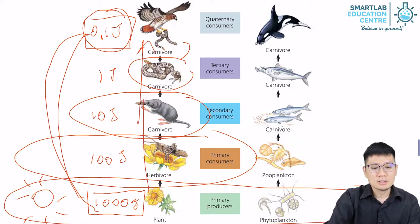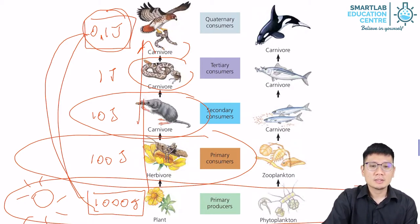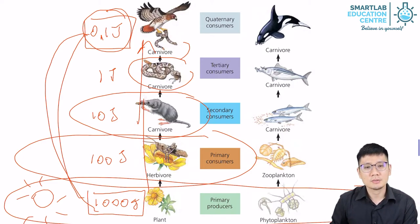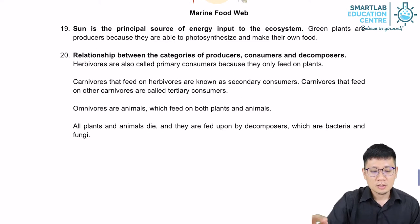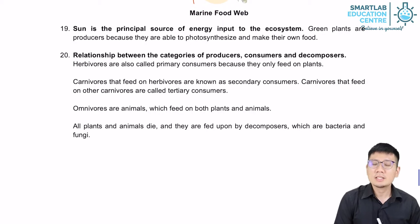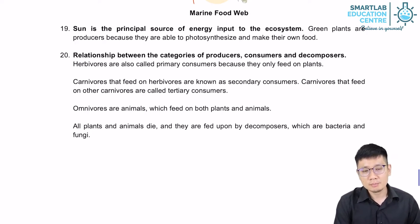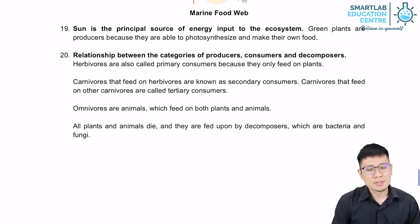The only way to sustain the food chain is with a pyramid-shaped population. Starting from the plants, there should be a much larger population, and as we go to the next trophic level and the next, the population dwindles. This is what we call a normal or classic pyramid. The key takeaway is that the sun is the principal source of energy, because sunlight is absorbed by plants through photosynthesis, producing food that becomes the basis of all energy within any food chain.